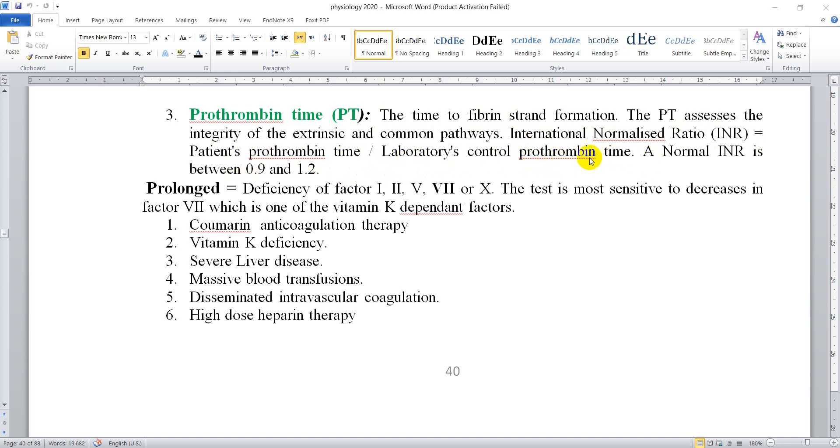The normal INR result range is between 0.9 and 1.2 seconds. Prolongation may indicate deficiency in factors of the extrinsic or common pathway.